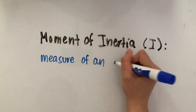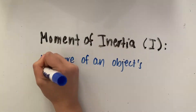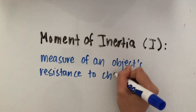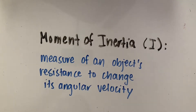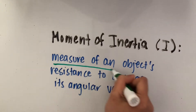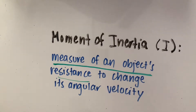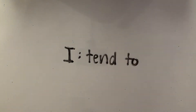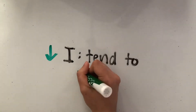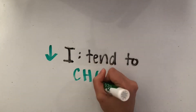The moment of inertia of an object that is able to rotate is basically a measure of that object's resistance to change its angular velocity. The higher the quantity, the more it will tend to stay the same. So the lower the moment of inertia, the more it will tend to change.